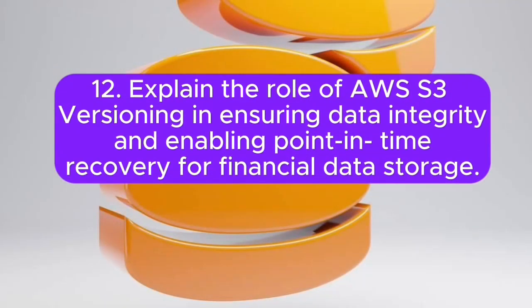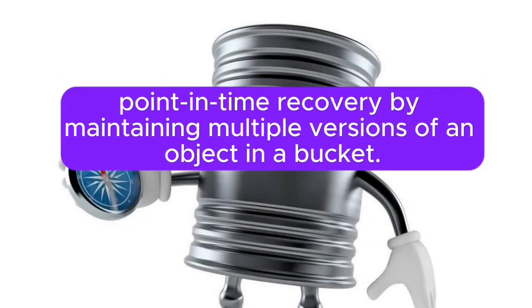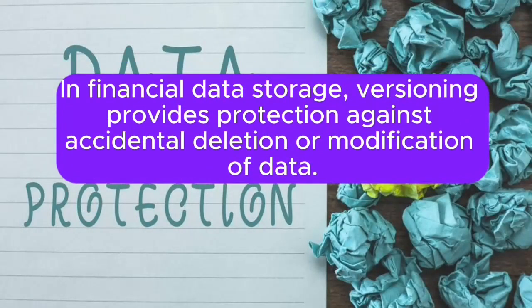Question 12: Explain the role of AWS S3 versioning in ensuring data integrity and enabling point-in-time recovery for financial data storage. Answer: AWS S3 versioning ensures data integrity and enables point-in-time recovery by maintaining multiple versions of an object in a bucket. In financial data storage, versioning provides protection against accidental deletion or modification of data.